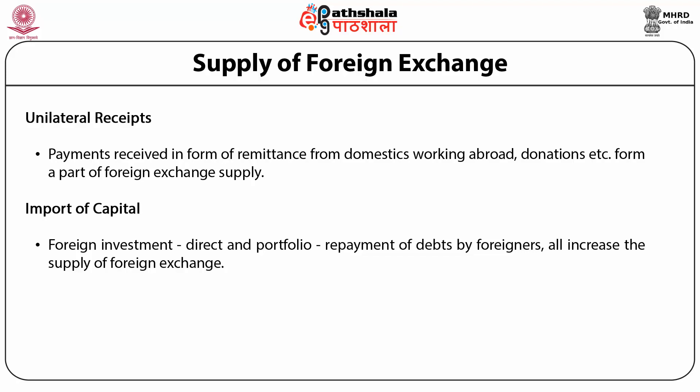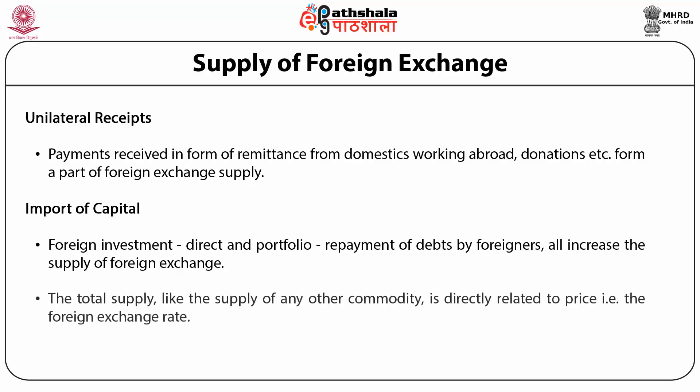All the above categories of receipts from abroad result in aggregate supply of foreign exchange. The total supply, like the supply of any other commodity, is directly related to price — that is, the foreign exchange rate. At a higher exchange rate, the supply of foreign currency may be high.